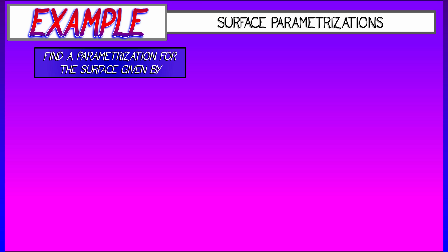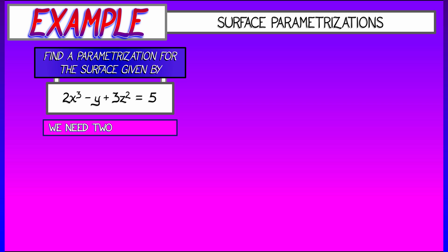Here's a problem. Find a parameterization for the surface that is given implicitly by the equation 2x cubed minus y plus 3z squared equals 5. Well, in this case, we need two parameters. Let's say s and t.